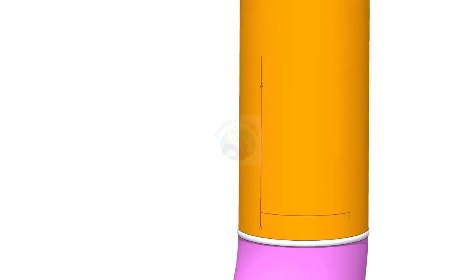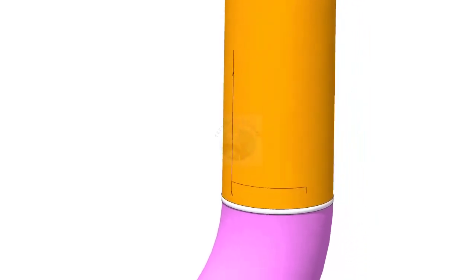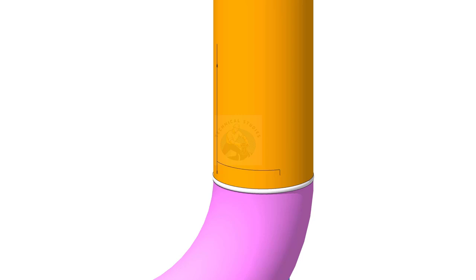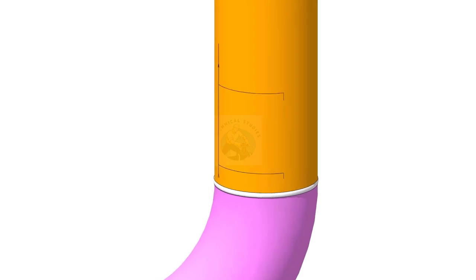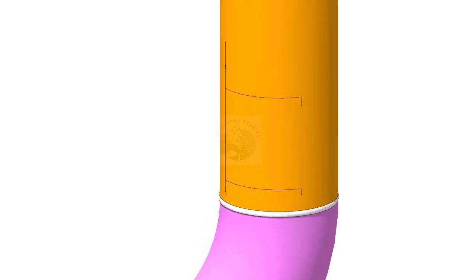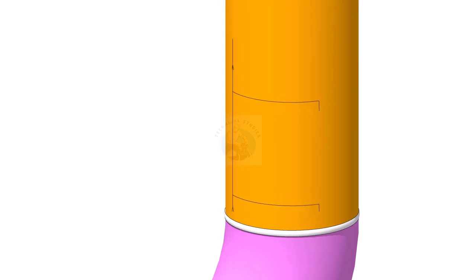Mark 254mm on the vertical pipe as shown. Draw the vertical centre line of the nozzle.